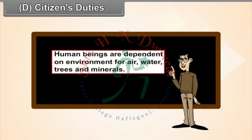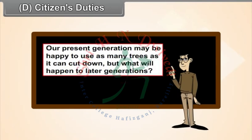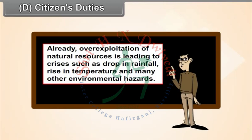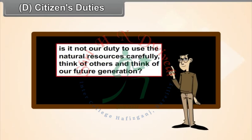Human beings are dependent on the environment for air, water, trees and minerals. If we use these natural resources indiscriminately, that leads to environmental degradation. Our present generation may be happy to use as many trees as it can cut down, but what will happen to later generations? Already, over-exploitation of natural resources is leading to crises such as drop in rainfall, rise in temperature and many other environmental hazards. This only shows the importance of duties.